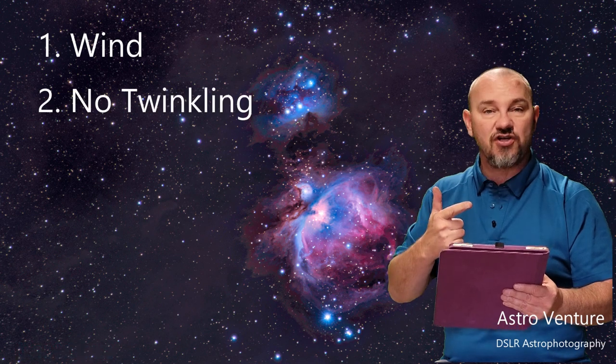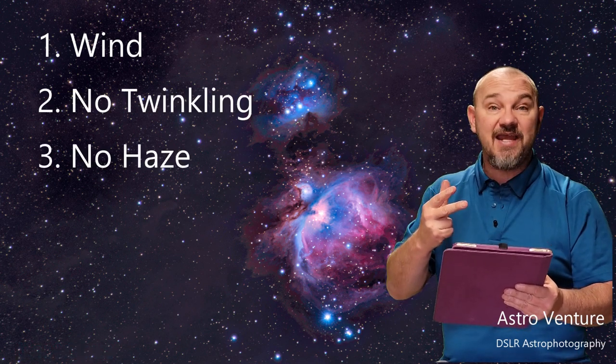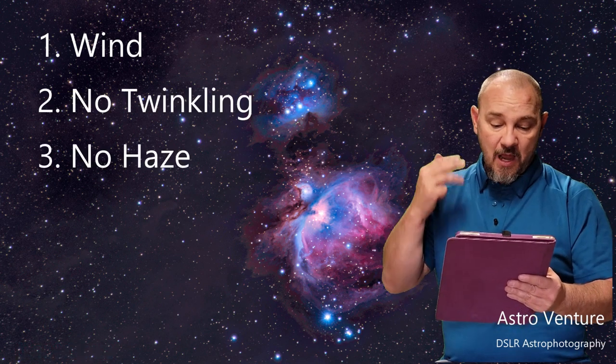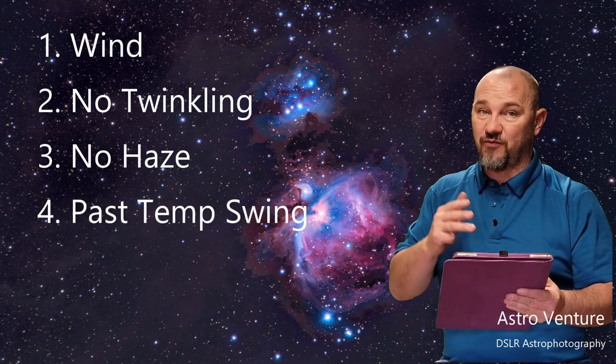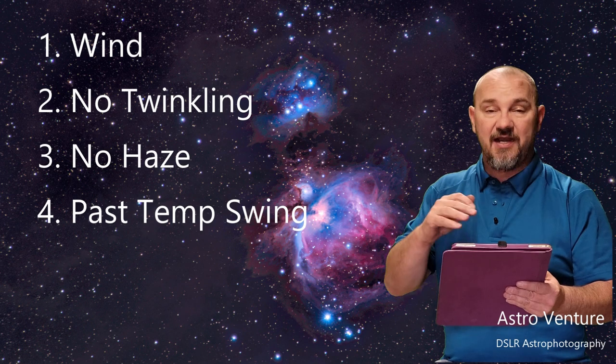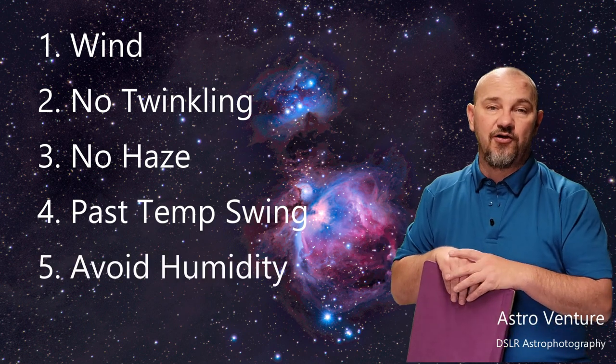So those are five quick tips for looking at the night sky to find those ideal conditions. Number one, no wind. Two, no twinkling stars. Three, no haze around the moon or in the sky. Four, middle of the night temperature swing has already passed, so we've settled into the night temp. And number five, avoid higher humidity nights.